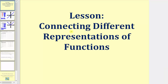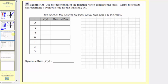Welcome to part three of the lesson on connecting different representations of functions. In example three, we're asked to use the description provided for the function f of x to complete the table, then graph the results and determine a symbolic rule or formula for the function f of x.